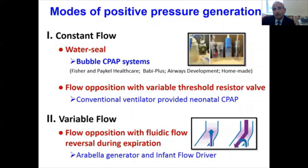Now that I've spoken about the interface, I'm going to briefly talk about how to generate the pressure. One can use a constant flow system, and the most simple one is a water seal system that utilizes threshold resistor principles, where the pressure is determined by the force applied to the surface area. The generated pressure is independent of flow. Bubble CPAP systems such as Fisher-Pecal, Babi Plus, Airway Development, and homemade systems are most commonly used.